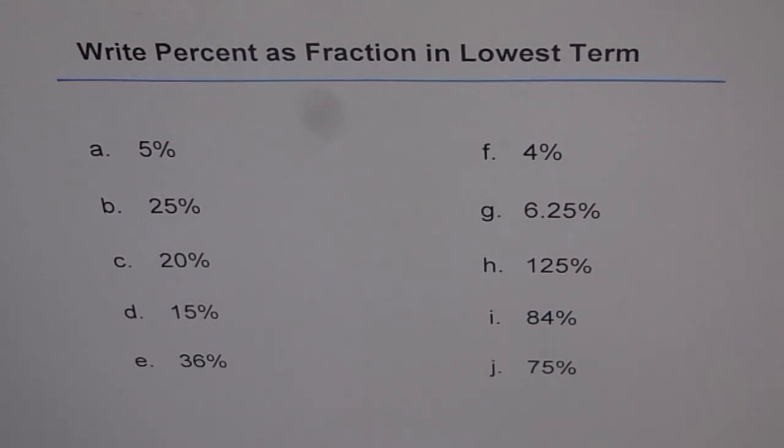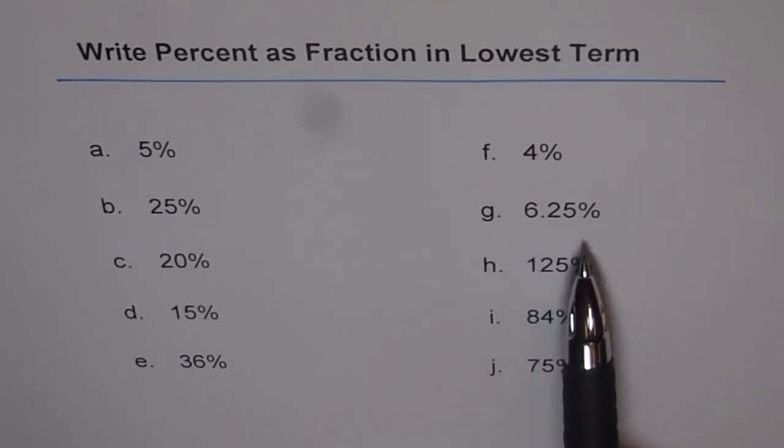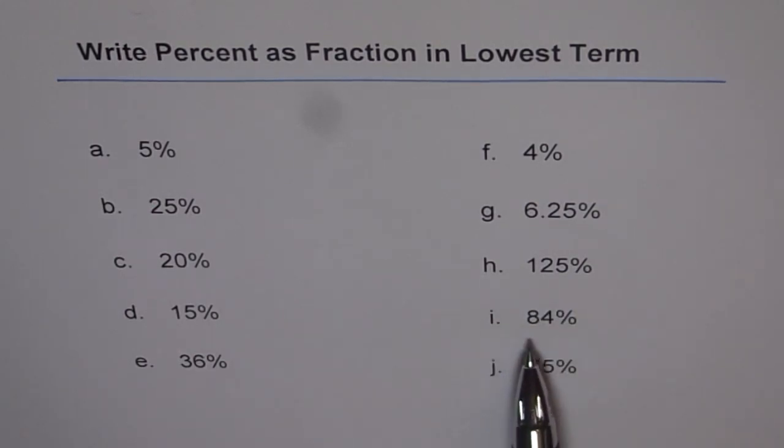A: 5%, B: 25%, C: 20%, D: 15%, E: 36%, F: 4%, G: 6.25%, H: 125%, I: 84%, J: 75%. You can stop the video here.